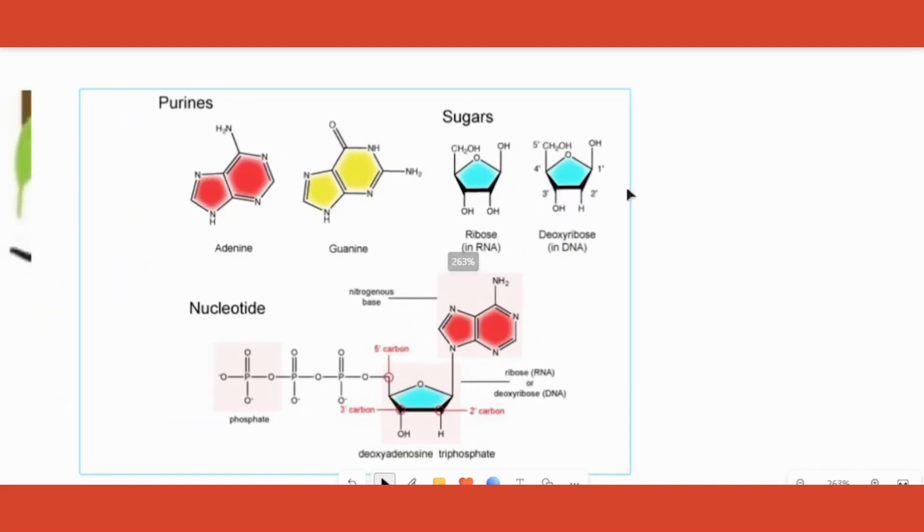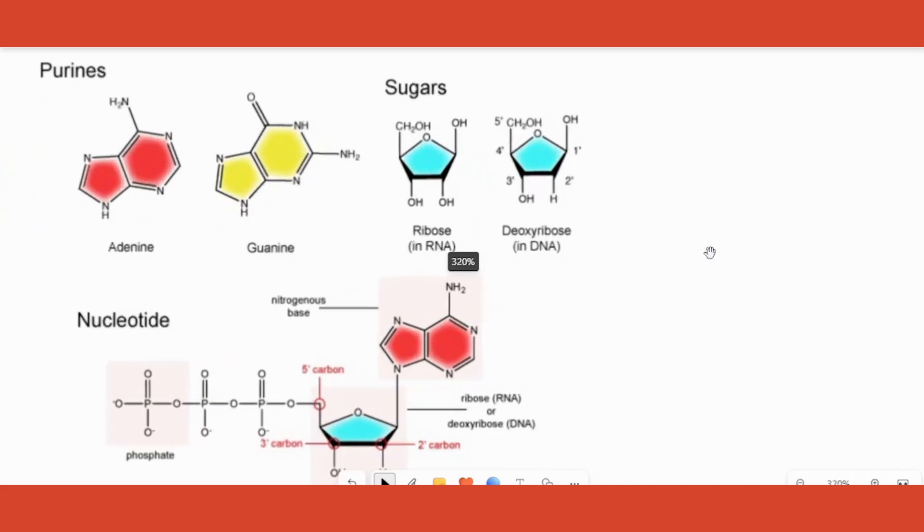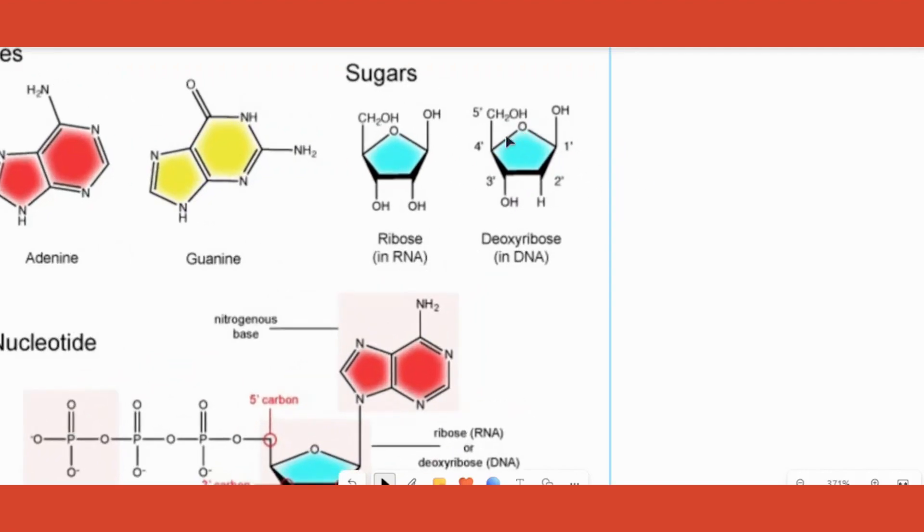Look at this sugar. The sugar is called as a pentose sugar because it has five carbons in it and there is a particular way in which the carbons are numbered. This is the first. When we look at this structure, whenever they draw a structure like this, it means that there's a carbon over here, carbon over here, carbon here, carbon here and there is a carbon here.